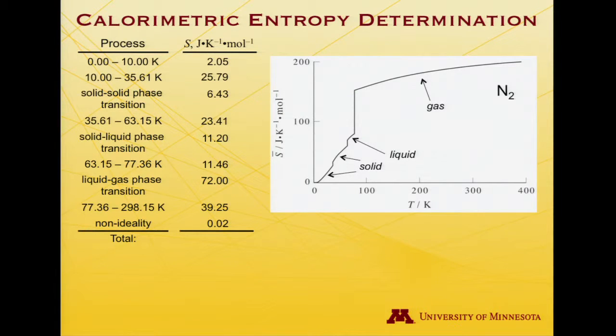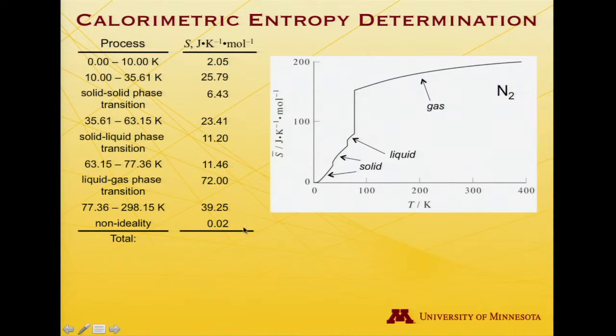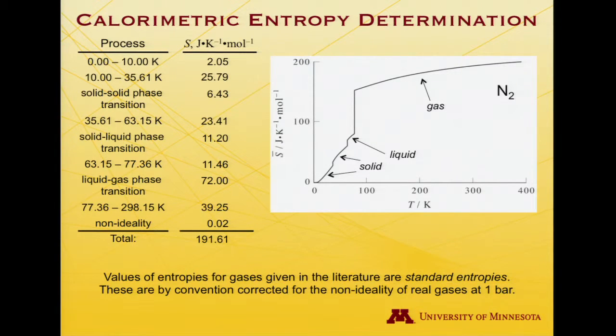And then finally, in tabulations, one often sees a correction for non-ideality. And that is simply to take note of, when you do the measurements, you tend to try to do it at very low gas pressures, so that things are behaving ideally. And then you correct for non-ideality as you go to actual, say, one bar pressure, so the real gas compared to the ideal gas. In nitrogen's case, at this temperature, that's not a very big correction, 0.02, pretty small compared to all these others. But we add all that together, and you get a value of 191.61 joules per Kelvin per mole. And so that is a standard entropy. And you can look this up in tables of collected physical quantities. And I've just mentioned to you that by convention, if you want to know the real gas, there's a correction for non-ideality at one bar of pressure. Okay. So having gone through that example, let me give you a chance to address a question related to it, and then we'll come back.